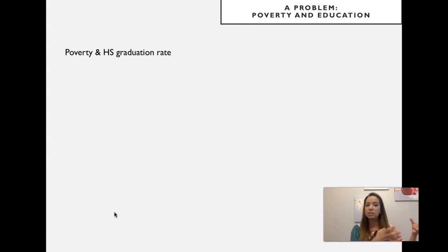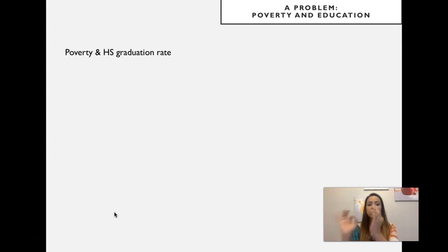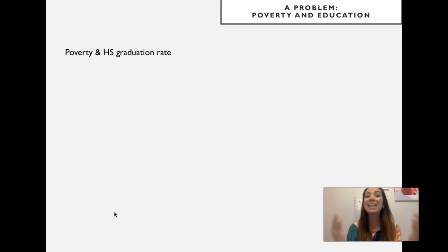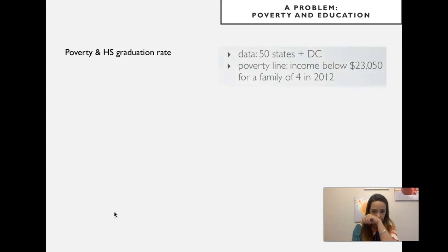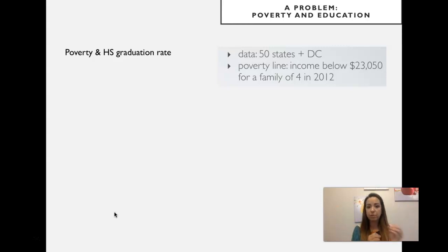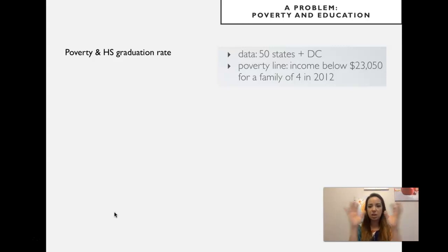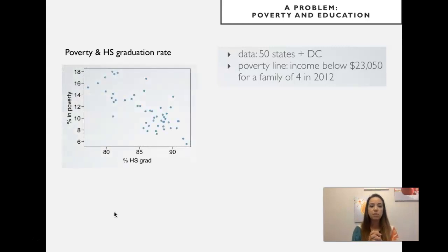Let's start with a problem: poverty and education. Is there a relationship between poverty — our response variable — and high school graduation rates? Is the amount of poverty in a particular location related to the percentage of people who graduate from high school? The graduation rate would be our explanatory variable. We'll look at real data from all 50 states plus Washington D.C. The poverty line is defined as income below $23,050 for a family of four, based on 2012 criteria.